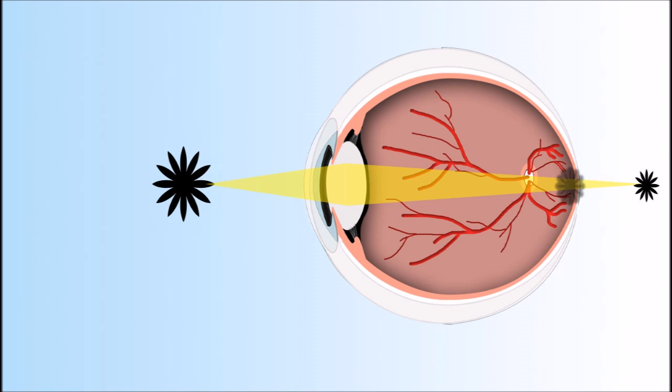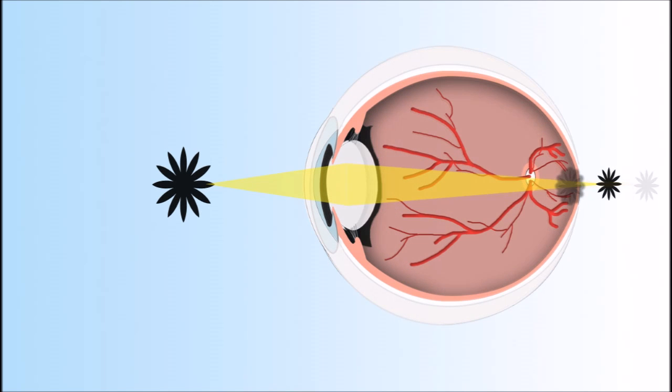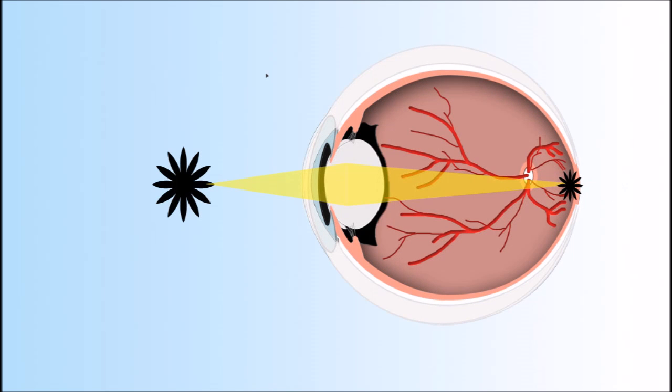In a younger patient, the lens is very flexible and it changes shape. This is known as accommodation. This process refocuses the image with clarity back onto the retina. This is a smooth process that is undetectable by a young observer.